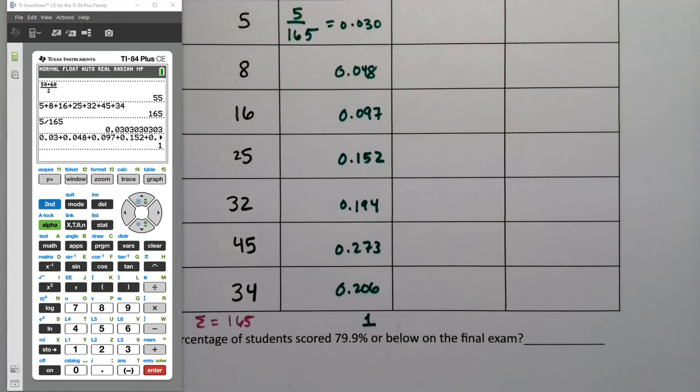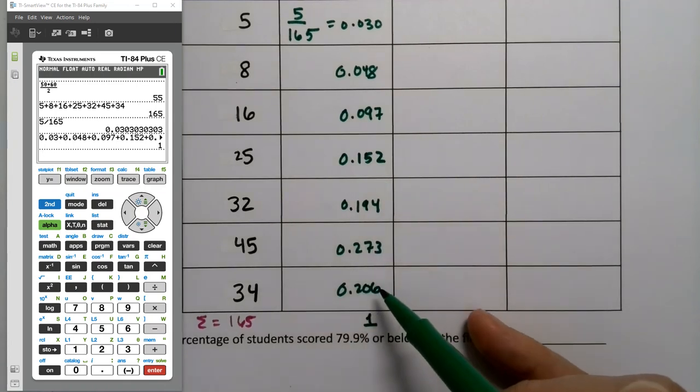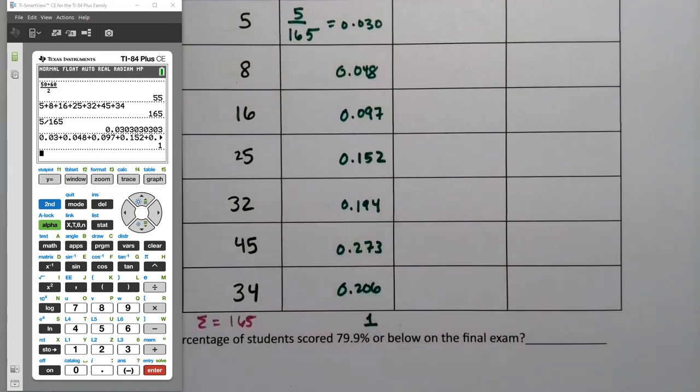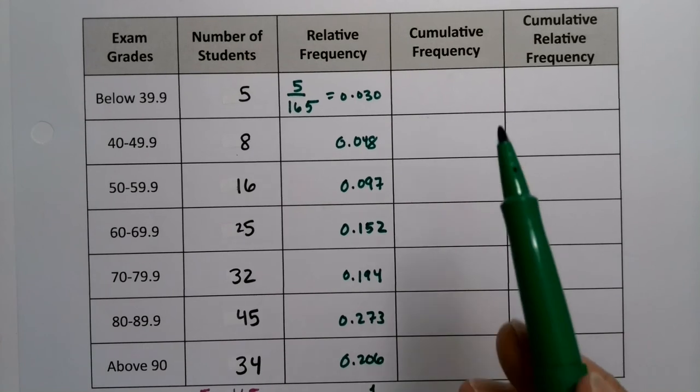If it had made like 0.999, that wouldn't have bothered me because that's just rounding error because we rounded to the third decimal place. But it, in fact, made one. So, even better. No troubles. So, that is review. We've already done this, but I just wanted to do it again.